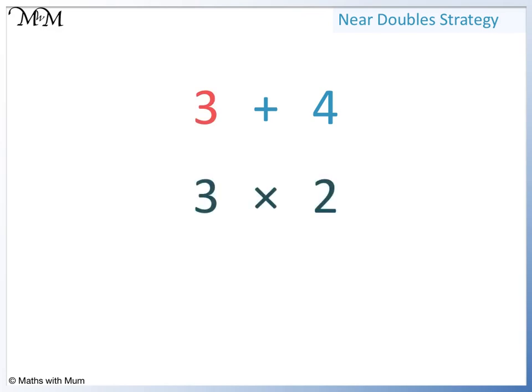3 times 2 equals 6. And because 4 is 1 more than 3, we add 1. 6 plus 1 equals 7.